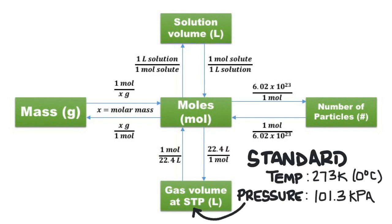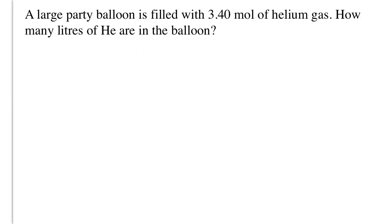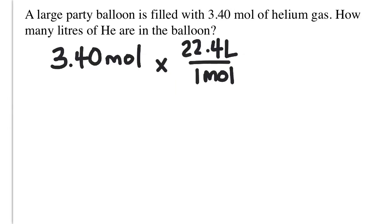A conversion factor is a fraction where the unit you want to cancel is on the bottom and the new unit is on the top. So we will use 22.4 liters over 1 mole. The math becomes 3.4 moles times 22.4 liters over 1 mole. We can plug this into our calculator, 3.4 times 22.4, and we get 76.2 liters of helium gas.